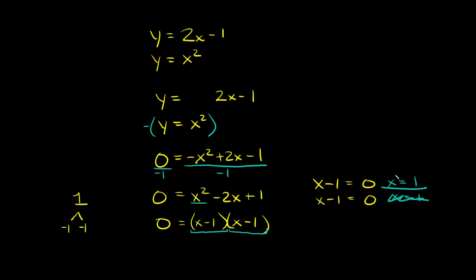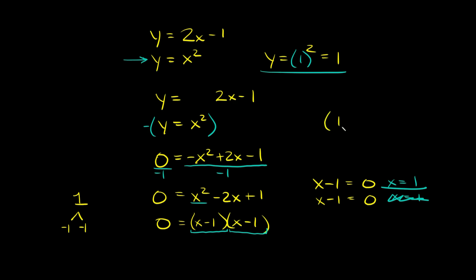The only thing left is to plug our x into one of the equations to get y. Plugging into y equals x squared: y equals 1 squared, which equals 1. So our x-coordinate is 1 and our y-coordinate is also 1. The solution or ordered pair is (1, 1).